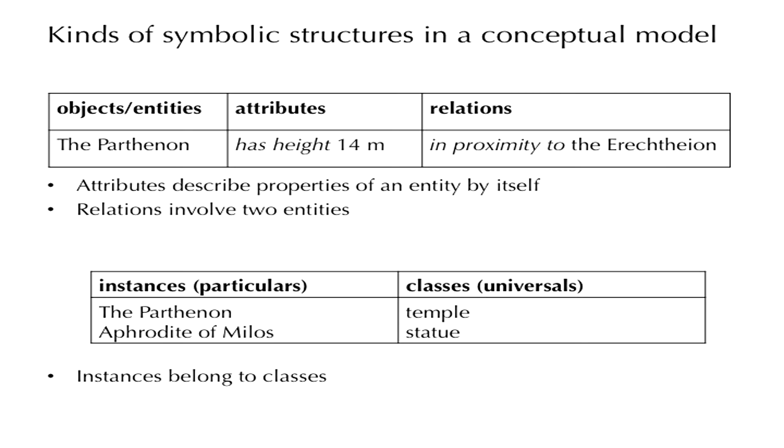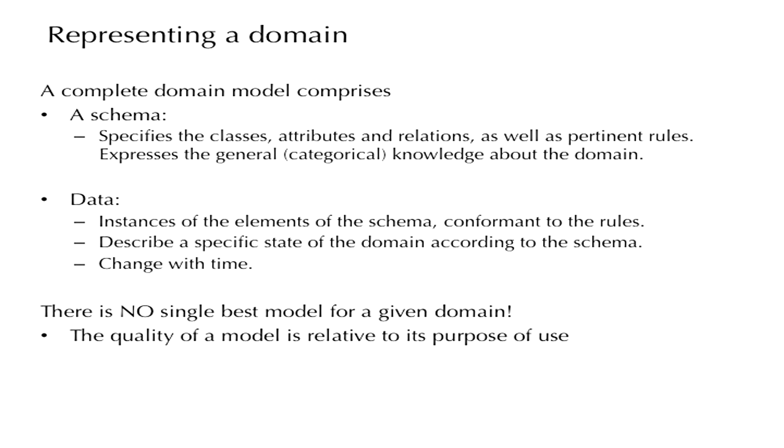Complete abstract description of a domain, so a complete representation of a domain, includes two parts. One part describes the general knowledge we have about that domain, and the other part describes the specific information that we have about each item that we know to be included in that domain. The first part is called a schema. So the schema specifies classes of entities, specifies attributes that the entities can have, and relations that can exist between those entities. And of course, any other rules that may apply. And as I said, it expresses the general knowledge about the domains, or else called the categorical knowledge about the domain. That is the knowledge about the categories that constitute this domain.